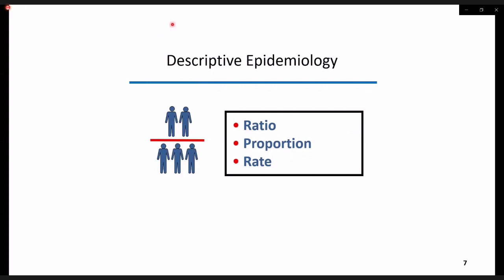In the subsequent slides, I will cover several measures of disease frequency such as risk, cumulative incidence, attack rates, and prevalence. But first, we will try to understand how a ratio, proportion, and rate are defined in terms of what and who is contained in the denominator and in terms of what time period the disease occurred.